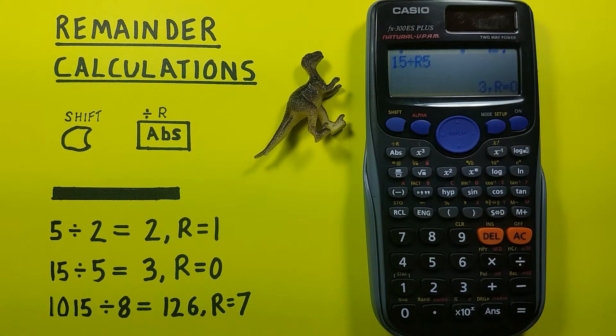And we see 3 with a remainder of 0 because we know 5 goes into 15 three times evenly with no remainder.